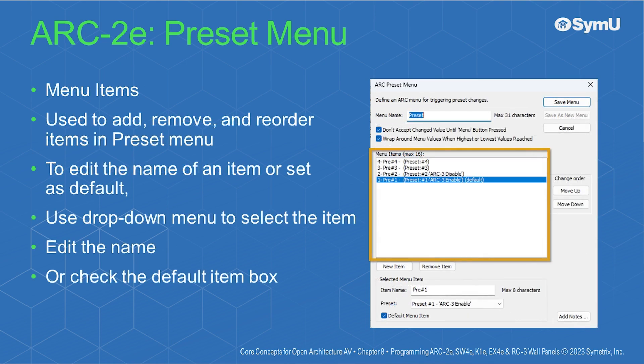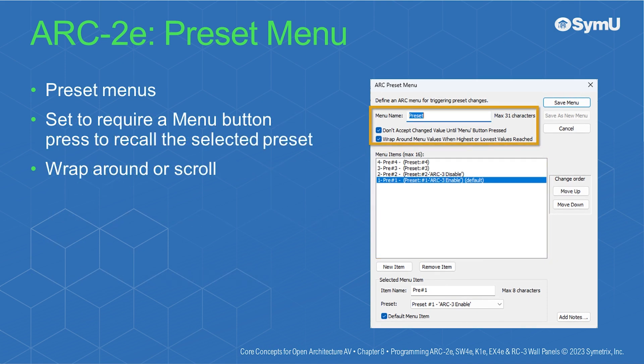A preset menu can be added from the Edit Arc2E window by selecting Add Preset Menu. The menu items portion of this window is used to add, remove, and reorder the items of the preset menu. To edit the name of an item or set an item as the default, use the drop-down menu to select the item, then edit the name or check the box to make it the default item. Preset menus can also be set to require a menu button press to recall the selected preset, and the menu can be programmed to wrap around or scroll between available items.